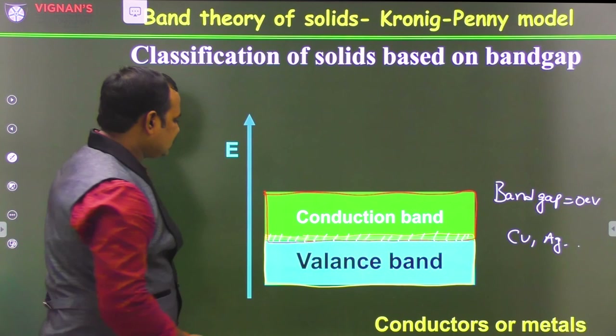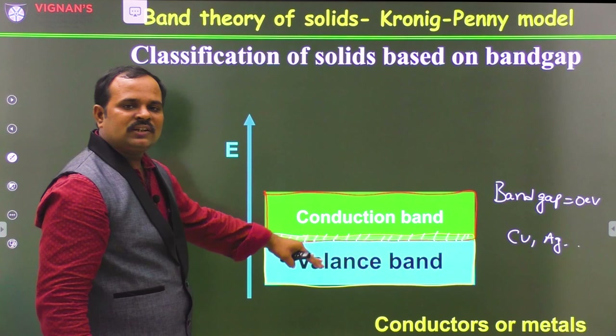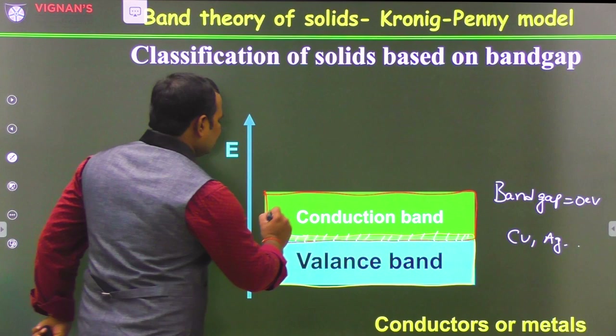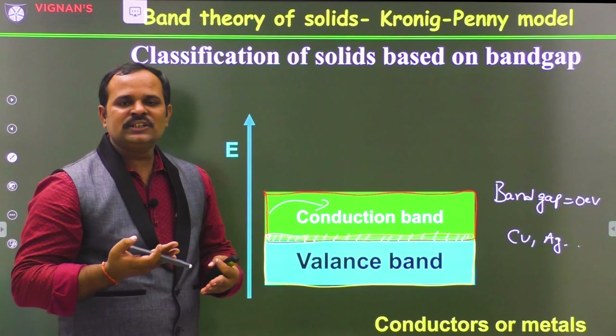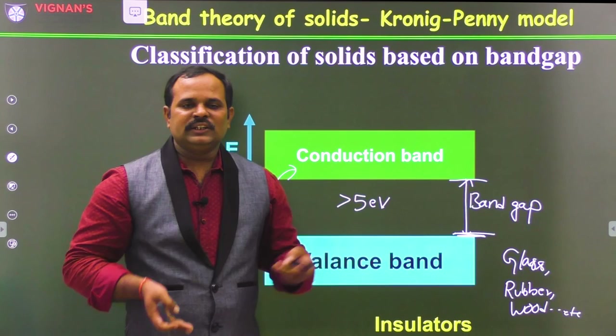In the case of metals, there is no need to supply any energy because the valence band is already merging with the conduction band. The electrons in the valence band are already in the conduction band, so they can participate easily in the conduction process. Because of this zero band gap, electrons in metals can move freely, so the conductivity of metals is larger. Based on the band gap, this is how we classify materials into conductors, semiconductors, and insulators. Thank you so much.